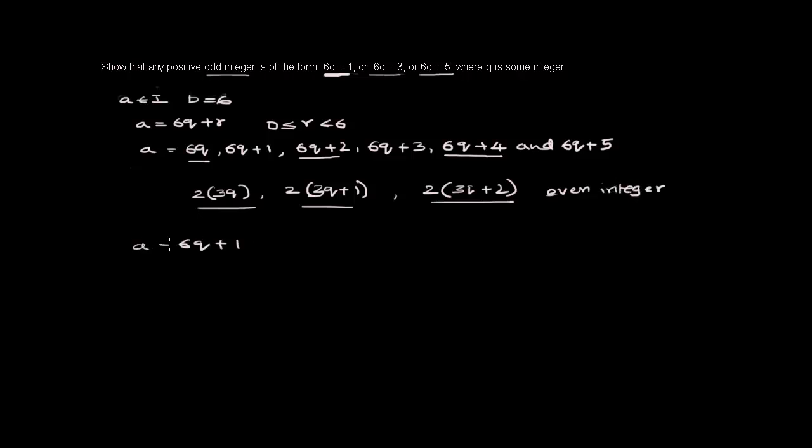Let us take a equals to 6k plus 1. Since we don't have any common factor here, it is not divisible by 2.